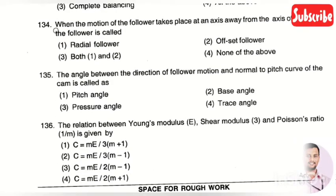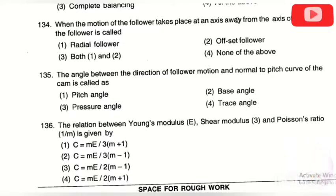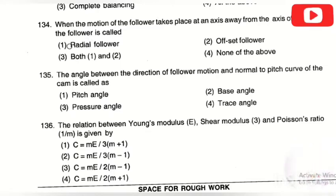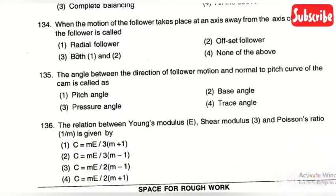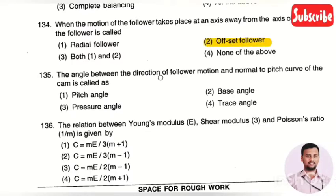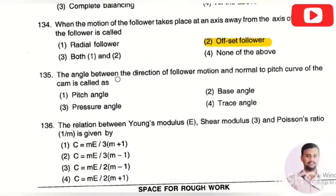The next question: when the motion of a follower takes place at an axis away from the axis of a cam, then the follower is called — option 1: radial follower, option 2: offset follower, option 3: both one and two, option 4: none of the above. The right answer is offset follower.